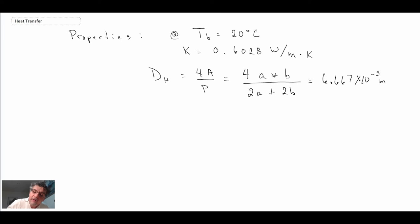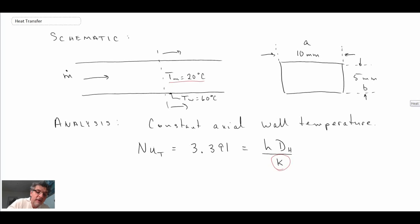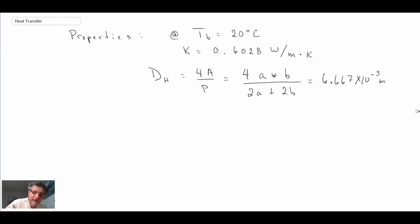So what we can do is take our Nusselt number, which we have right here. We've solved for k—well, we looked that up in the tables. Dh we just computed. So the last thing left here is going to be h, the convective heat transfer coefficient, and that's what we want to solve for. So with that, we can isolate h.